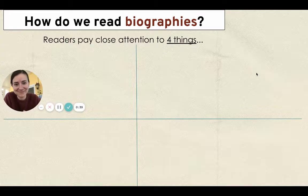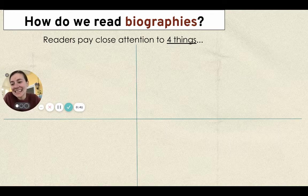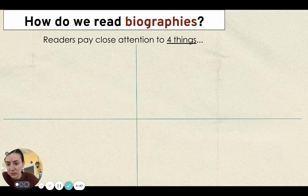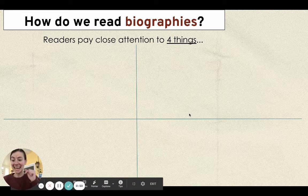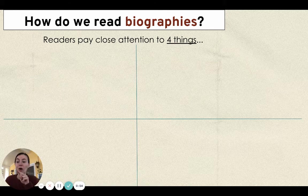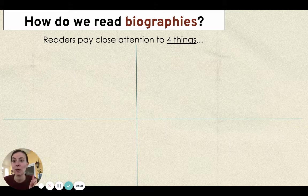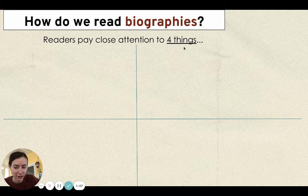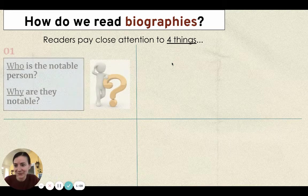You know all this already. Last week we learned that readers pay close attention to four things when they read biographies, and we went through each of those four things. Today you're going to get a chance to pay attention to all four of these things at one time, about one person you choose to read about. So let's look back and review — what were those four things we pay attention to when we read biographies?